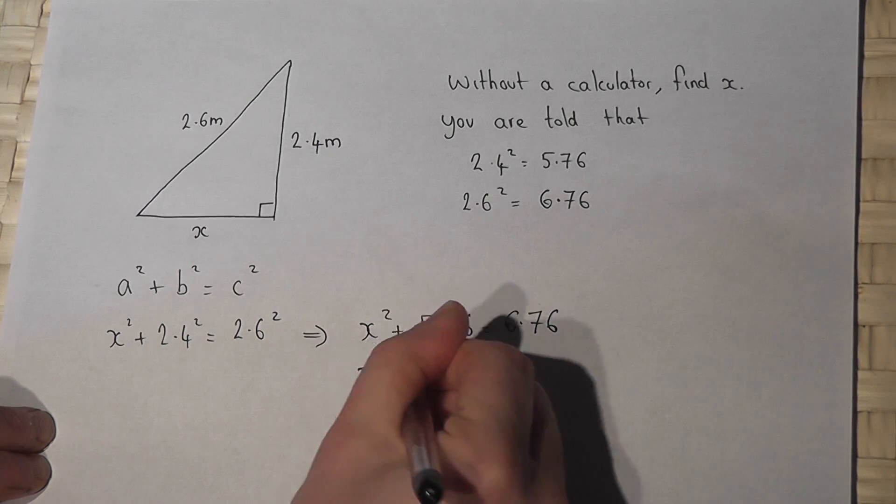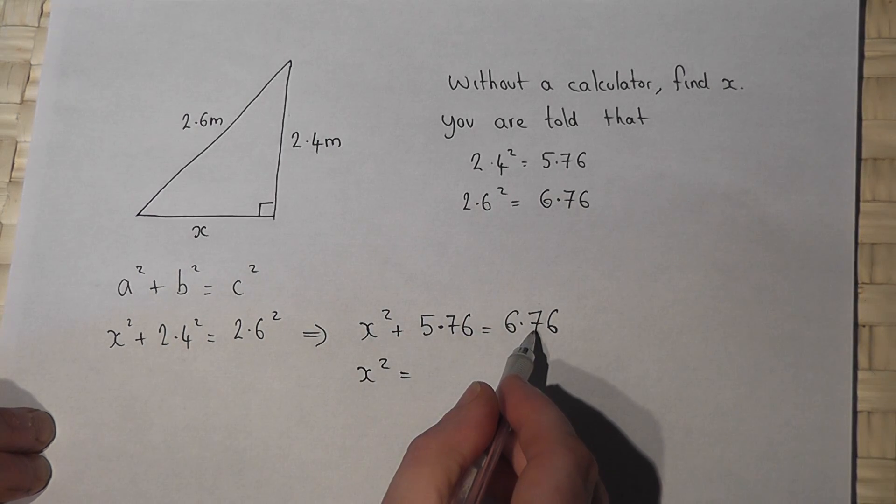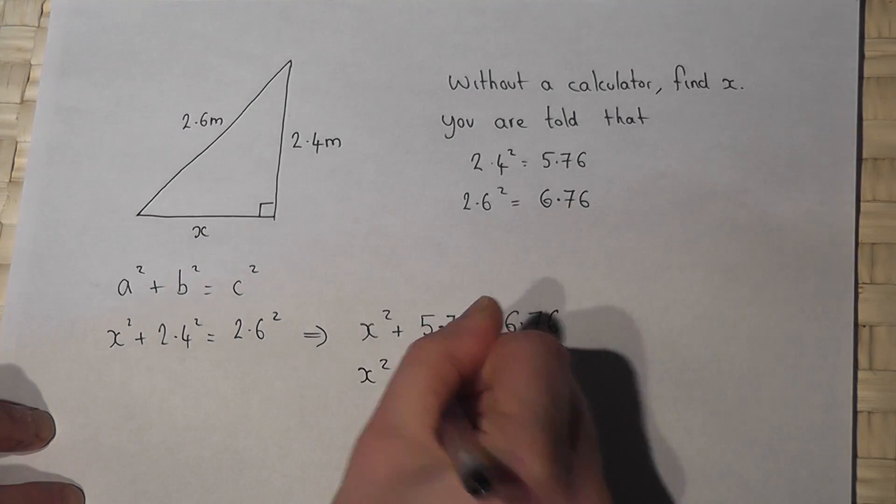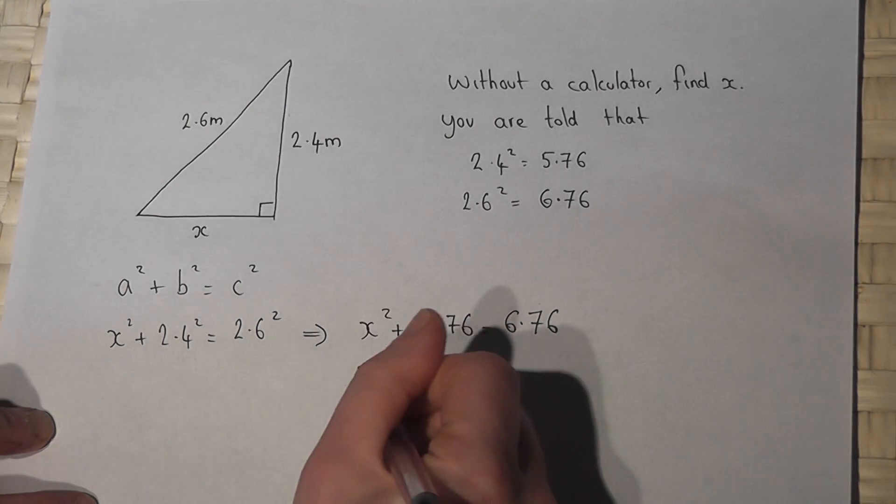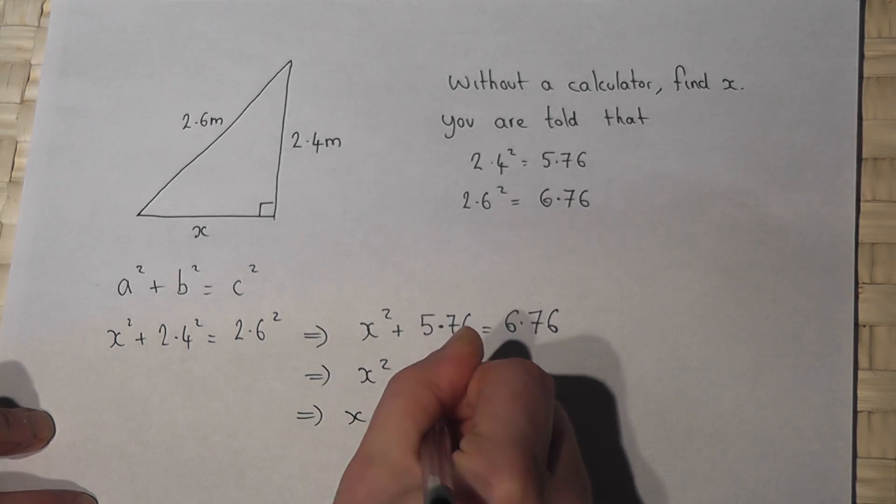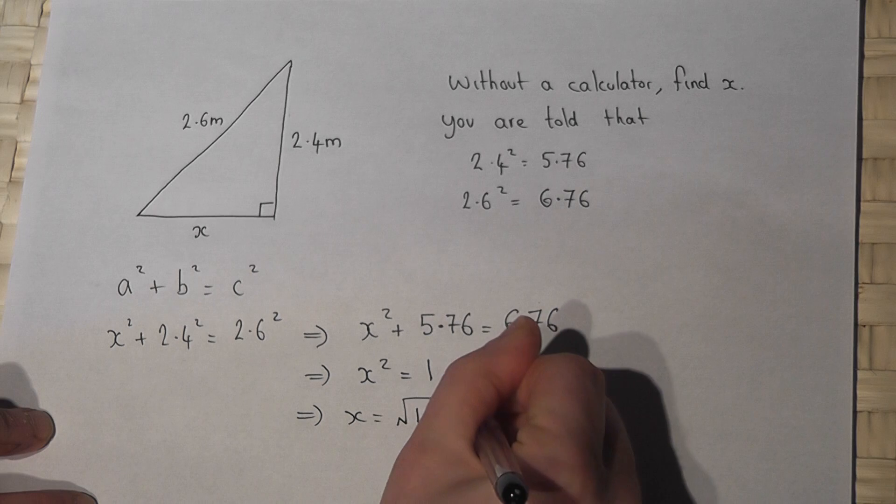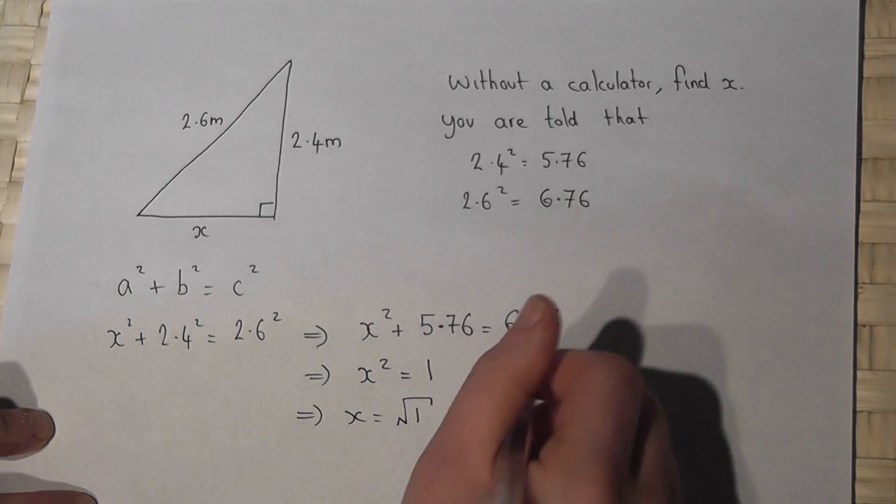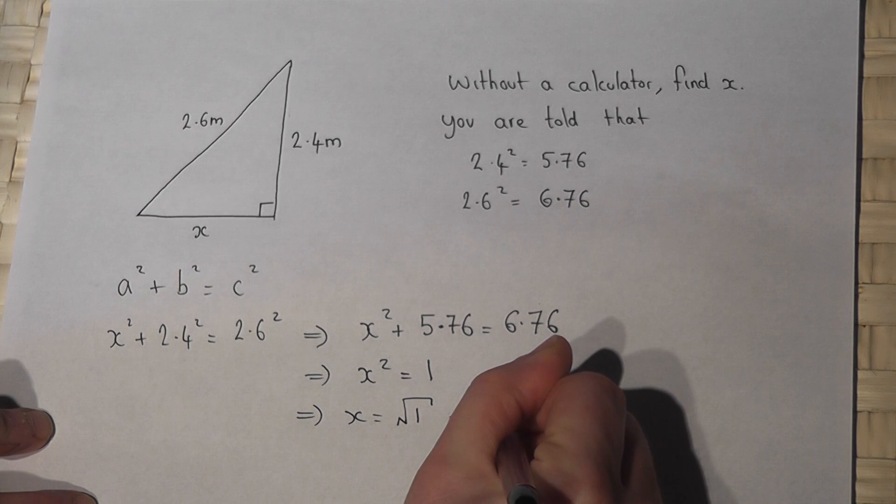So x squared just equals 6.76 take away 5.76, which just equals 1. So to find x, I just work out the square root of 1, which is just 1 because 1 times 1 is 1. So x has a value of 1 metre.